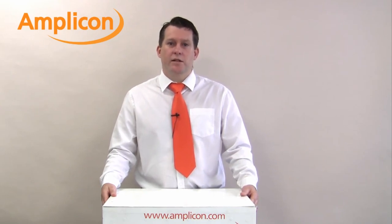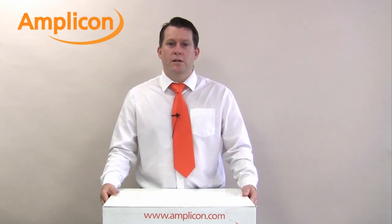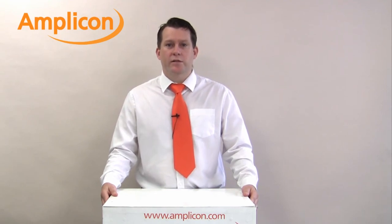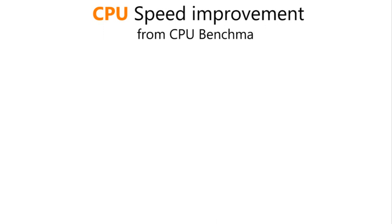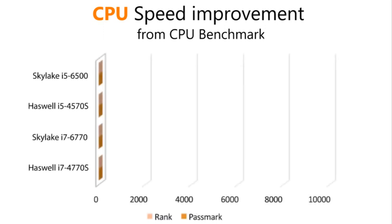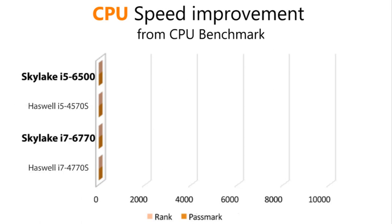The results you will see are readily available and links will be provided at the end of the video. So why would you want to move? There are some key integral features we should review first. The following results have been collected from CPU Benchmark, a company specialising in the development of high-performance benchmark solutions. Here we show you a comparison between the chosen roadmap CPUs from the Intel Haswell and Intel Skylake range adopted by Amplicon.